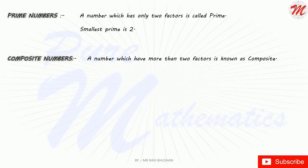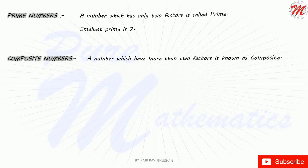What are composite numbers? All the numbers which have more than two factors will be known as composite numbers.